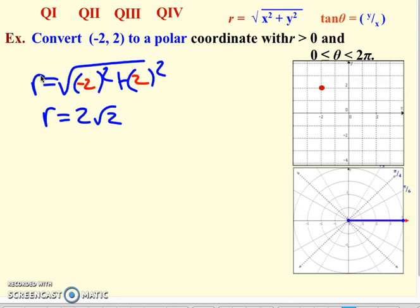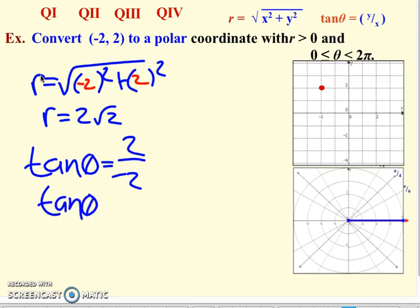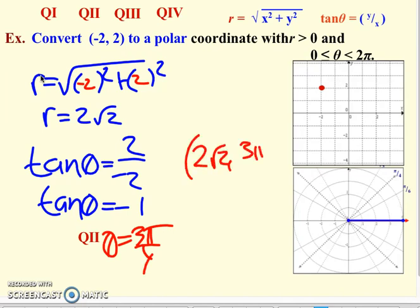Tangent of theta, y over x. Now at this point, basically you're solving like a simple trig equation. But the idea is you need to remember what quadrant your original coordinate was in. Negative 2, 2 is a quadrant 2 angle. So when you go to choose your theta, you've got to choose that theta based on quadrant 2. Now we should all know that the angle in quadrant 2 that has a tangent value of negative 1 is going to be 3π over 4.